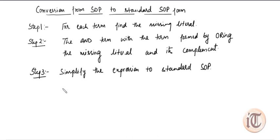Hello friends. In this video we will see how we can convert the SOP form, that is sum of products form, into a standard SOP form. As explained in a previous lecture, the standard SOP form is a form in which each term in a Boolean equation must contain all the available input variables, or we can say all the literals.